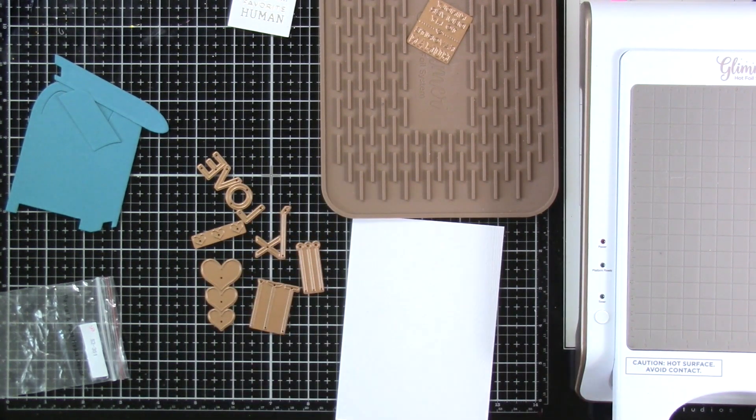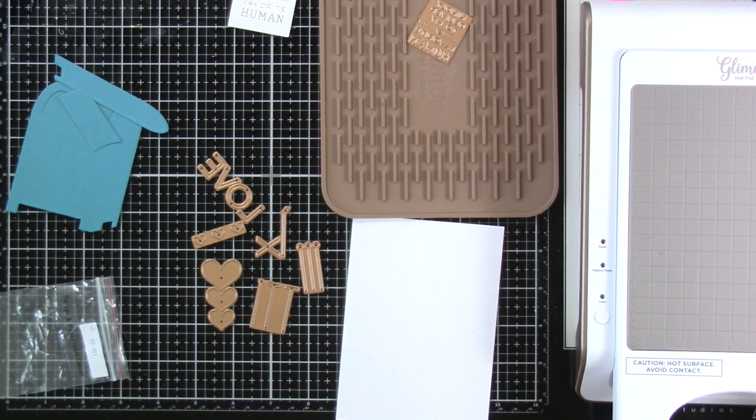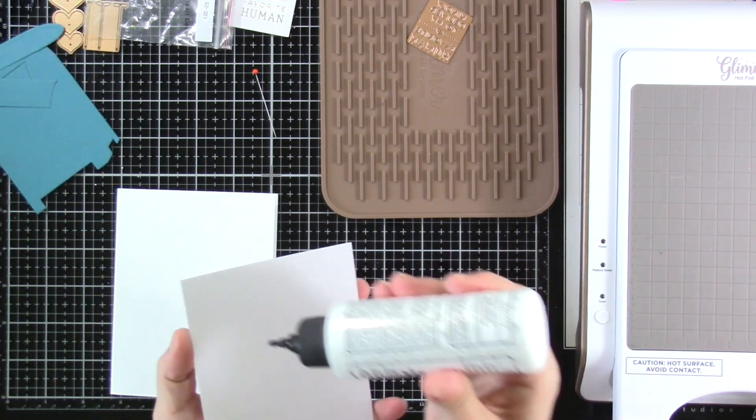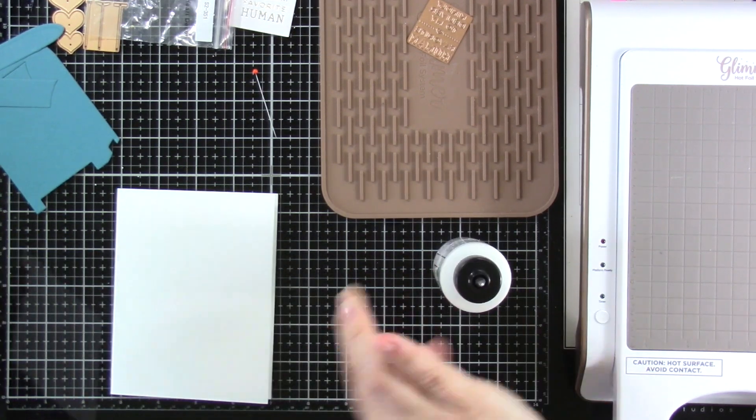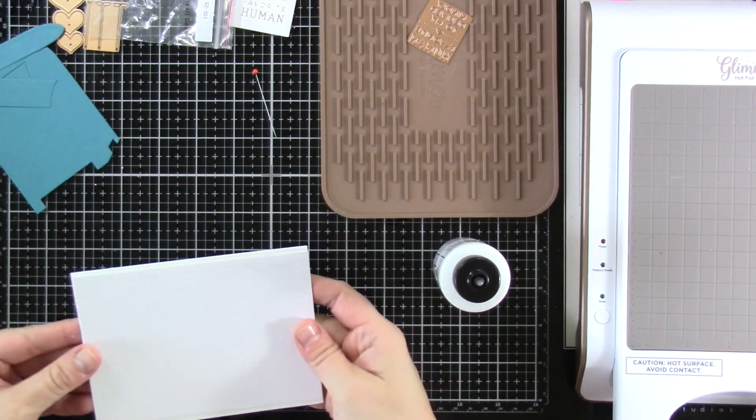But I've got this piece of cardstock. It has a little bit of a wood grain background to it. That's going to be my panel. And I've cut that down to four inches by five and a half inches. So I'll have a little bit of a border on the left and right hand side.